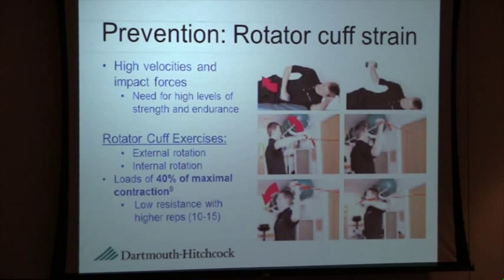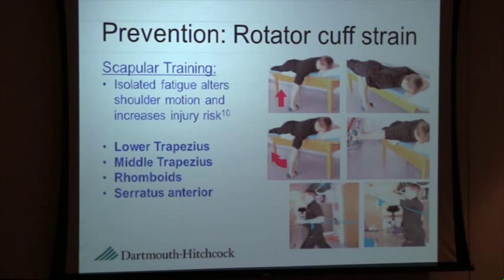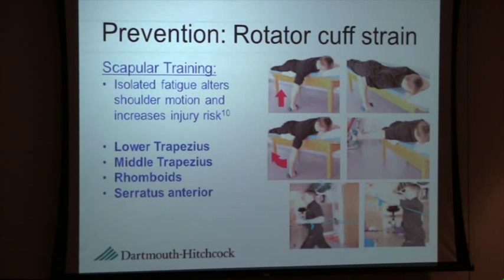When talking about the shoulder, we also have to address the scapular aspect. Research has shown that isolated fatigue of the scapular musculature leads to alterations in shoulder motion, which increases injury risk. The exercises you want to do for scapular training specifically are rowing-type exercises, prone exercises, and horizontal abduction where you bring your arm out to the side — things that really engage the muscles around your shoulder blade.